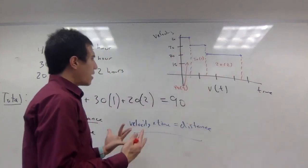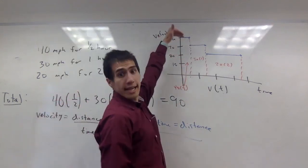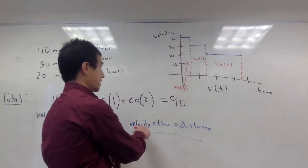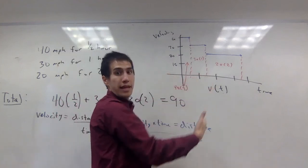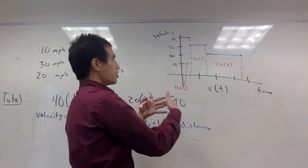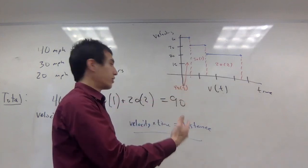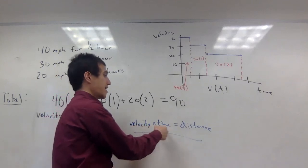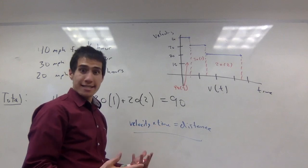Think about why this makes sense. If I'm traveling at a constant velocity, the height is the velocity and the base is the amount of time that I have traveled — this axis is measuring time. So if I travel at a constant velocity I get a rectangle, and the area of that rectangle is exactly the velocity times the time, which measures my distance.